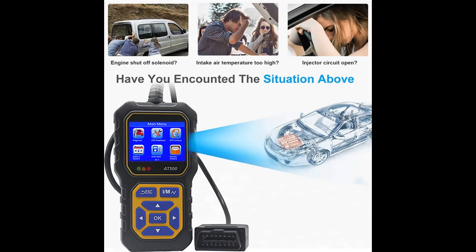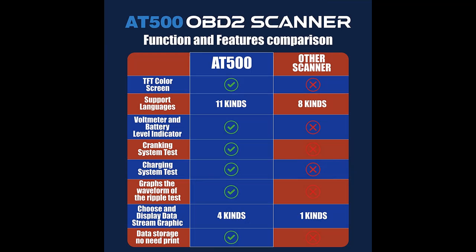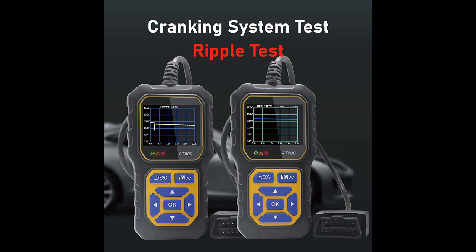For checking the car engine, the tool displays DTC definitions on the unit screen, views freeze frame data, displays monitor and I/M readiness status, emissions, and identifies pending codes. It also reads live PCM data stream and displays live O2 sensor test data.